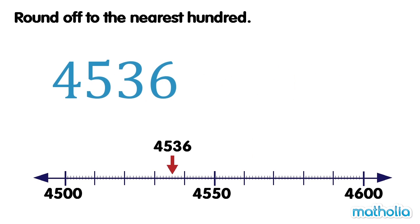Let's round off 4536 to the nearest hundred. When rounding to the nearest hundred, we look at the digit in the tens place. The digit in the tens place is 3.